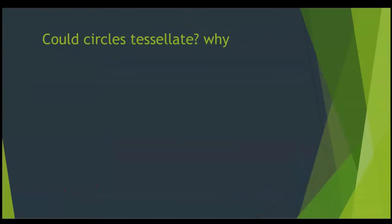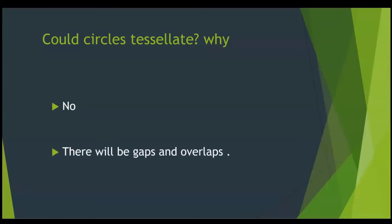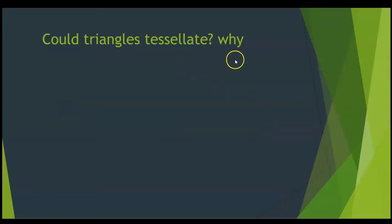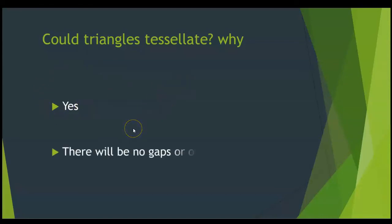Let's see this question: Could circles tessellate, and why? This question wants you to answer using yes or no and to explain. We said all circles cannot tessellate, so the answer is no. Why? Because there will be gaps and overlaps. Let's try one more question: Could triangles tessellate, and why? We said all types of triangles can tessellate, so our answer will be yes. Because there will be no gaps or overlaps. You have to mention gaps or overlaps when you answer this type of question.